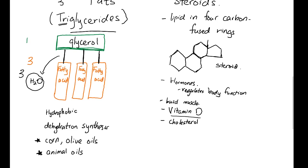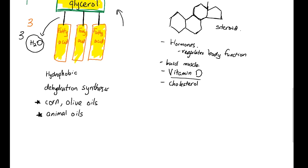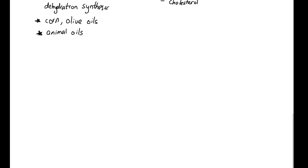Today we're going to focus on triglycerides. 'Tri' means three, and 'glycerides' is a word derived from glycerol. Triglycerides are commonly known as fat found in our food, and are most commonly part of the lipids family. Triglycerides are made of glycerol and three fatty acids through the process of dehydration synthesis.